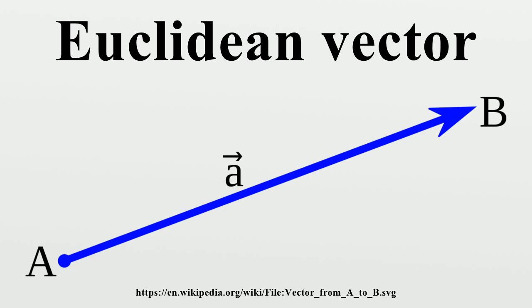Another way to represent a vector in n dimensions is to introduce the standard basis vectors. For instance, in three dimensions, there are three of them. These have the intuitive interpretation as vectors of unit length pointing up the x, y, and z axis of a Cartesian coordinate system, respectively.